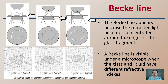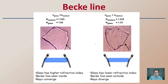It's important to identify the presence of a Beck line because that tells you there is a difference in refractive indices between the glass piece and the liquid medium. Where that halo is found will tell you which one is greater, helping determine the approximate range of the refractive index for the glass you're investigating.